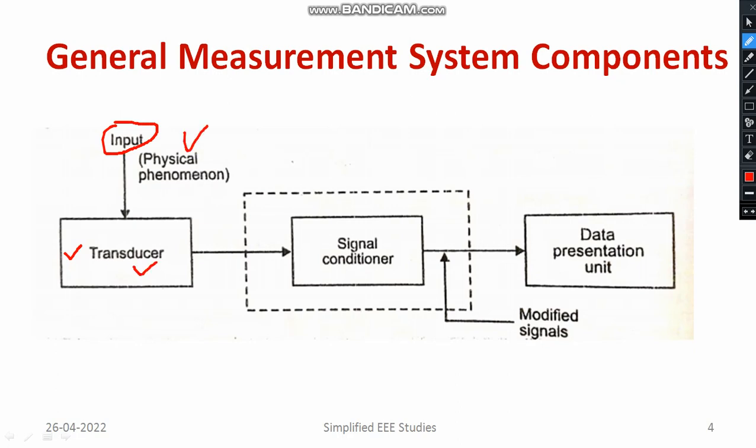The physical phenomenon will be the input, and the physical input will be converted into electrical output using a transducer. However, whatever the transducer output — the electrical signal — may not be in a proper form. The amplitude of that particular signal may be very weak, or the signal may carry a lot of electromagnetic interference. A lot of disturbance will be present along with the transducer output, and the signal level may not be right.